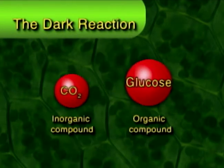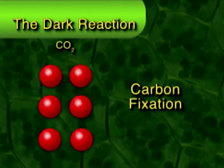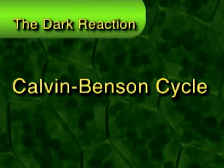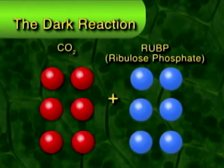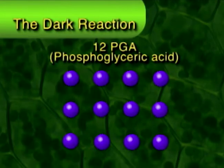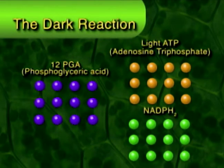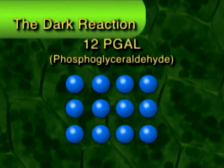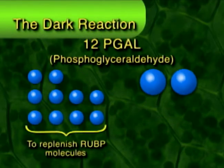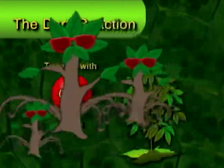There, carbon dioxide, an inorganic compound, is used to form glucose, an organic compound. This process is called carbon fixation, which occurs by a series of enzyme-controlled reactions called the Calvin cycle. Six carbon dioxide molecules react with six ribulose phosphate molecules to form 12 phosphoglyceric acid molecules, which is further converted into phosphoglyceraldehyde by using up 12 ATPs and 12 NADPH2 from the light reactions. Two of these phosphoglyceraldehyde molecules form one molecule of glucose. The other ten are used to replenish six ribulose phosphate molecules to react with carbon dioxide again.